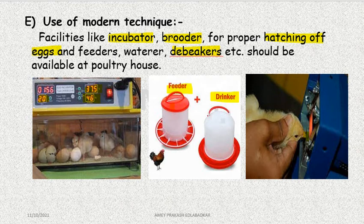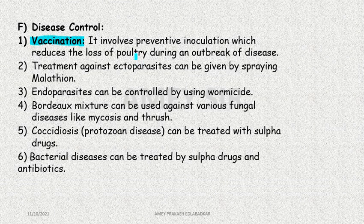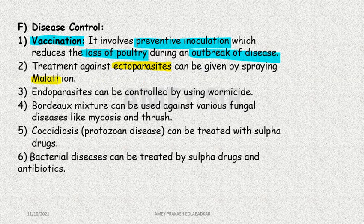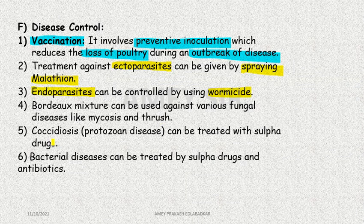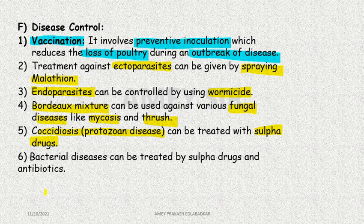Disease control is another important aspect. Regular vaccination is necessary to reduce poultry loss and prevent disease outbreaks. Preventive inoculation with vaccine is necessary. Ectoparasites and endoparasites also need to be treated - for ectoparasites, malathion is used for spraying; for endoparasites, vermicides are used. Bordeaux mixture is used for different fungal diseases like mycosis and thrush. Coccidiosis is an important protozoan disease treated with sulfa drugs. Bacterial diseases in poultry birds are also treated with sulfa drugs and antibiotics.